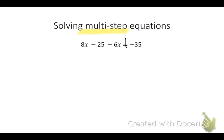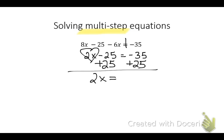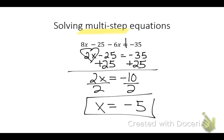8x minus 6x is what? 2x minus 25 equals negative 35. Now where do you put your heart? Around the 2x. How do you get negative 25 to the other side? Add it. Inverse operations. 2x equals negative 10. Divide. And x equals negative 5. Great job, Mikhail.